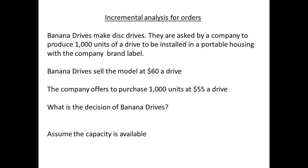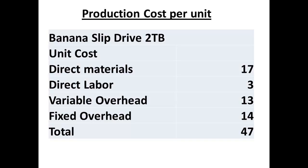Many companies will produce their products and only sell under their own brand name. However, where there is spare capacity, they may be tempted to produce the same product for a third party. How do they determine whether this is worthwhile? The answer is to carry out incremental analysis. Banana Drives has spare capacity and usually sells a particular model for $60 a drive. An offer comes from a company to purchase 1,000 units at $55 to be installed in a housing that will carry the company's own label. The first step will be to look at the cost per unit to produce the drives. The total cost of $47 per unit is made up of direct material, direct labor, variable overhead, and fixed overhead. The fixed overhead is the key to understanding this analysis.